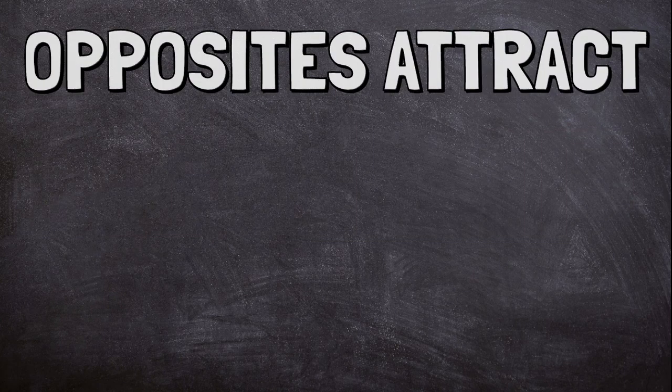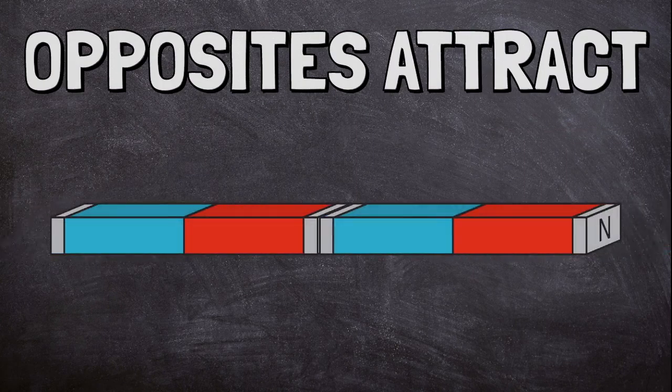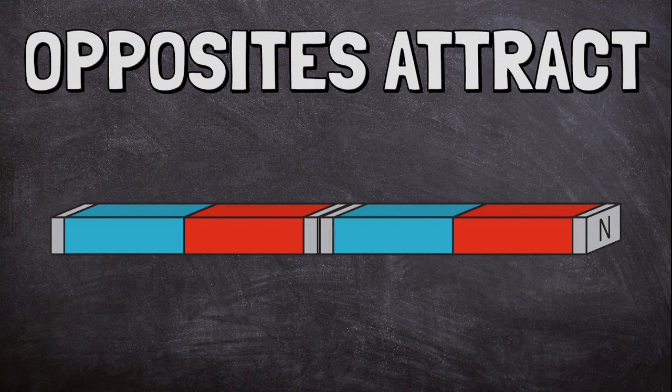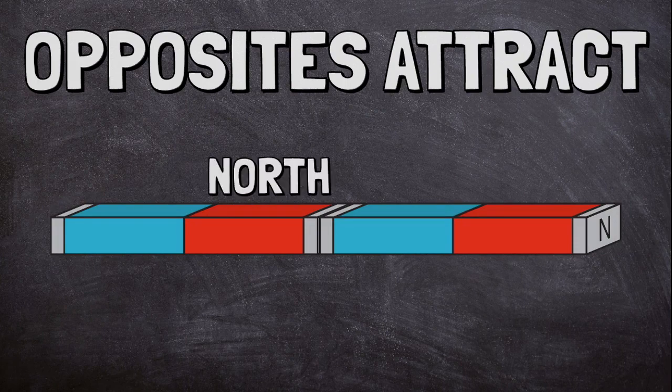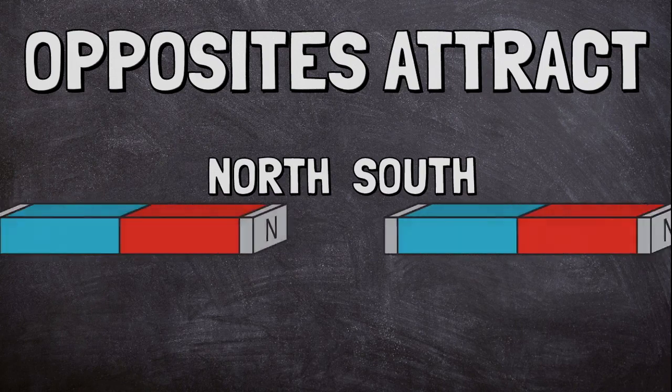Magnets can attract or repel other magnets. When two magnets are attracted, they pull towards each other. Opposite poles attract, so if the north pole of one magnet is facing the south pole of another, they will attract and stick together.